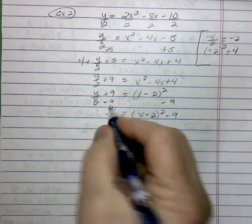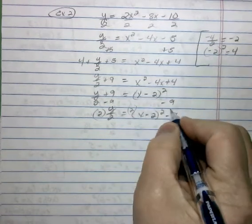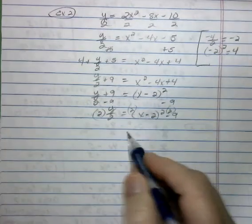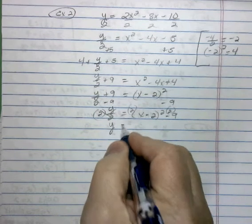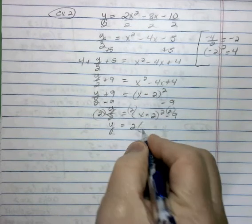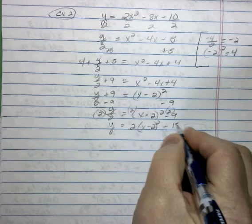We've got to get rid of this divided by 2. So we're going to go back through and multiply everything by 2. Remember to multiply everything. So we have y equals 2 times x minus 2 squared minus 18.